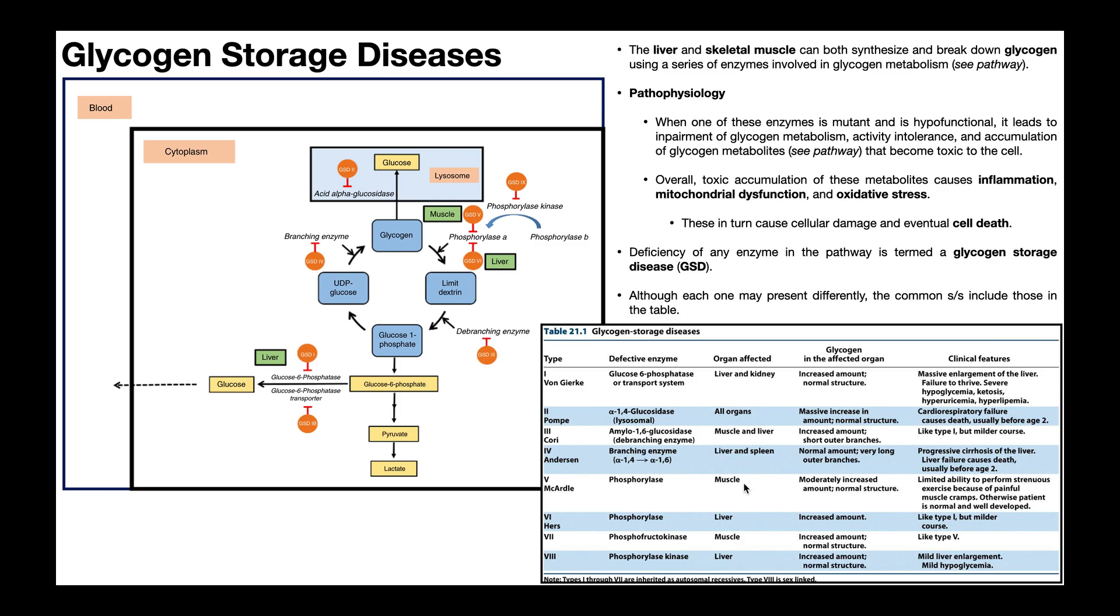This specifically affects the form of phosphofructokinase in skeletal muscle. So that being said, it's going to present similarly to McArdle's disease, which is the type 5 glycogen storage disease. Remember these individuals are going to be normal and well-developed, but might have some exercise intolerance. So again, type 7 will be a milder form of this disease type.